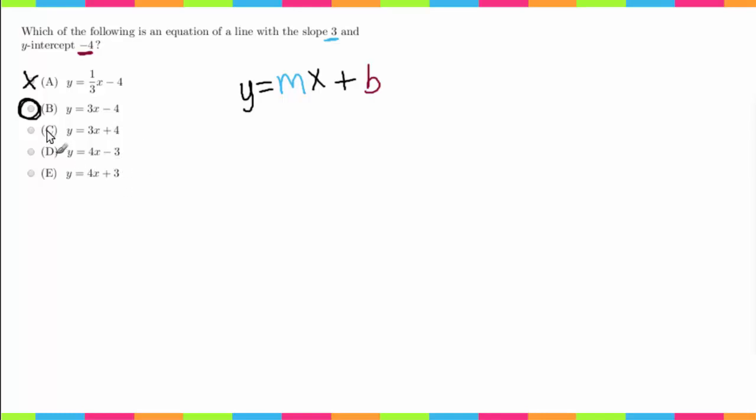But let's go ahead and go through C through E. C isn't the correct answer because its y-intercept is positive 4. D isn't our answer because it has a slope of 4 and a y-intercept of negative 3. Similarly, E isn't the answer because it has a slope of 4 and a y-intercept of positive 3. So again, all you really need to do to answer this question is to just remember this formula, which is just slope intercept form of a line, and then you should be good to go.